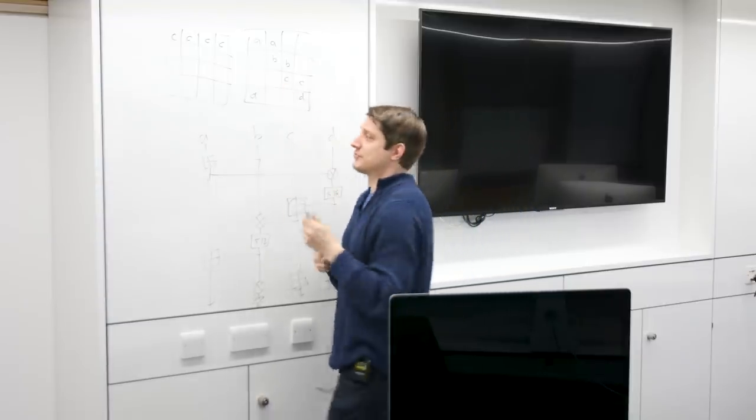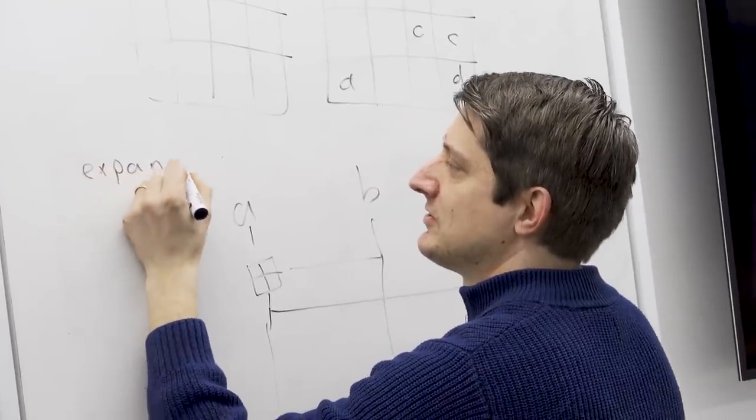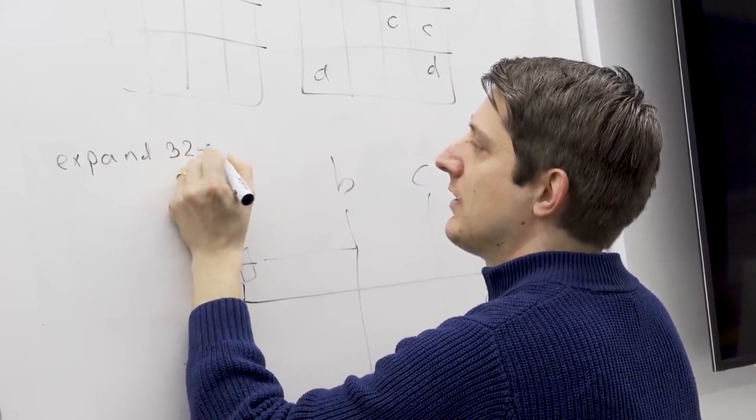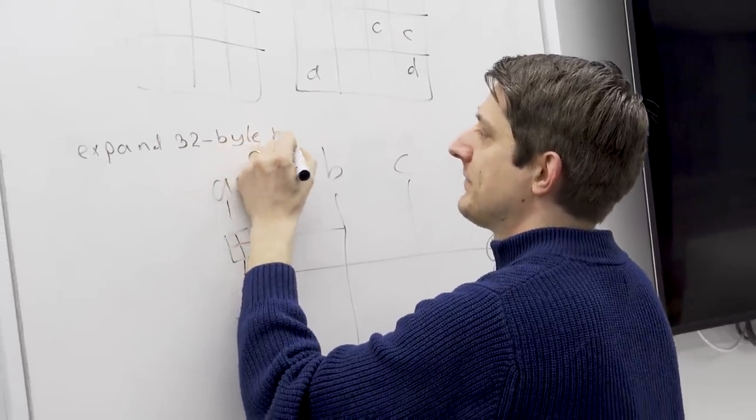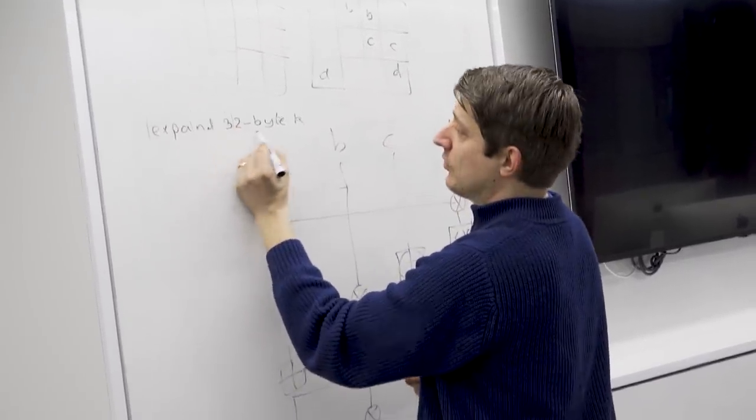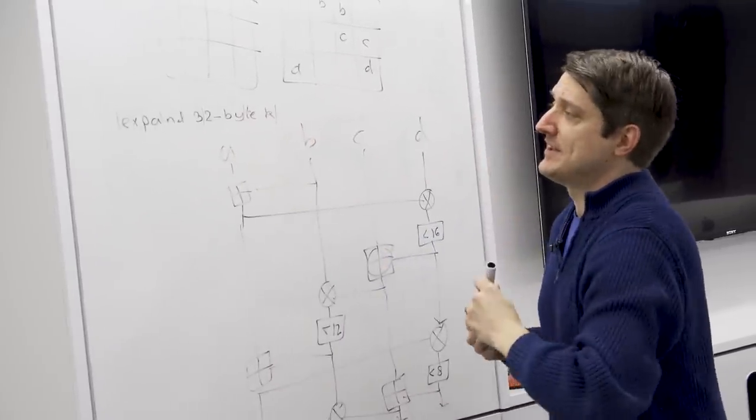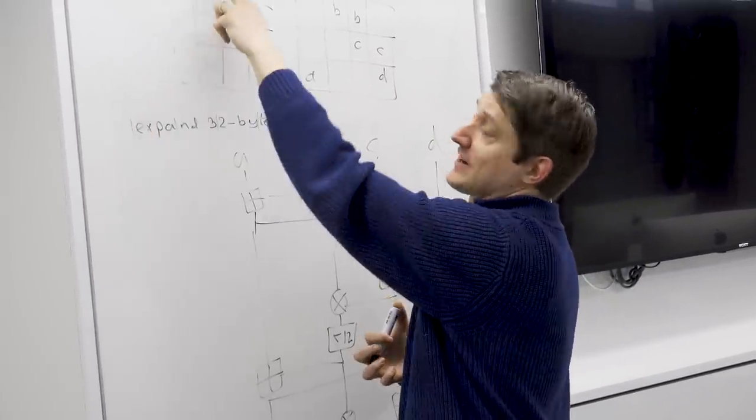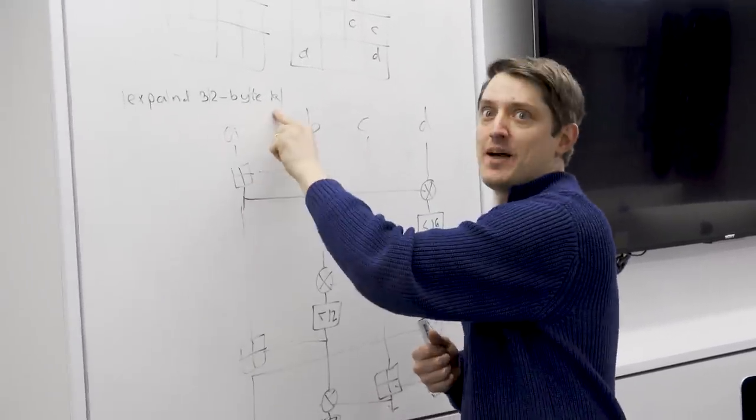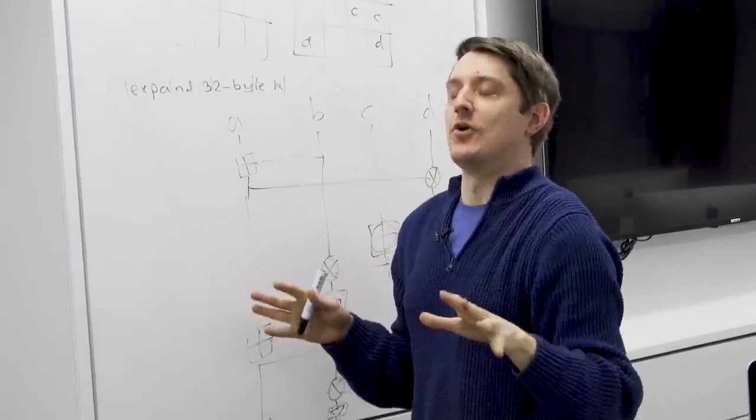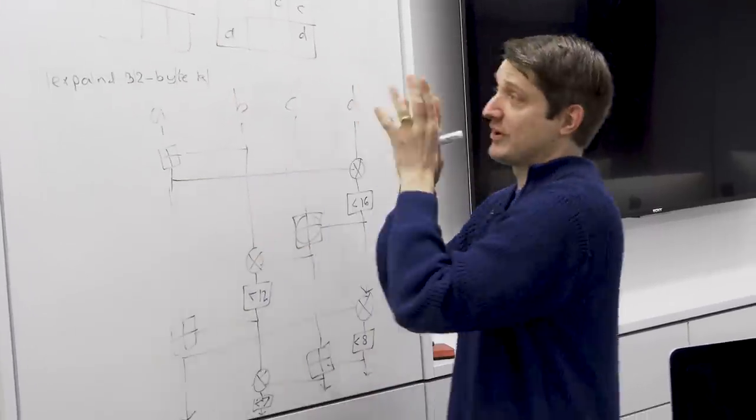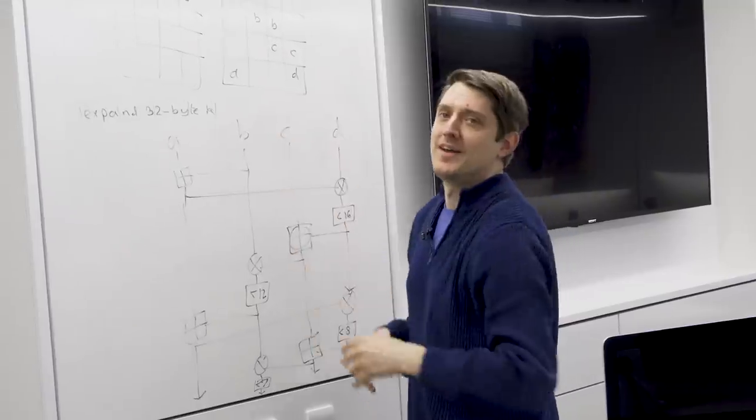The constants are just a string. The string is expand 32 byte k. So we've got four space counts. And then these get encoded as ASCII and stuck in here. And that's a nothing up my sleeve number. You remember that video we did where if these were sort of weird numbers, you'd think, well, hang on a minute, where'd they come from? Are they some kind of back door? Well, no, they're just a sentence. Expand the 32 byte key, which is what this does. As long as it's something obvious, they're just there to mix it up a bit. They're not a secret.